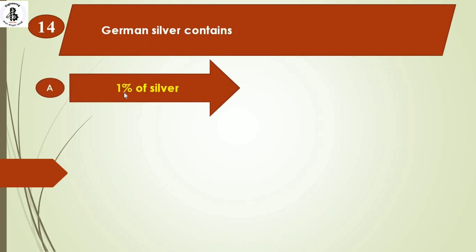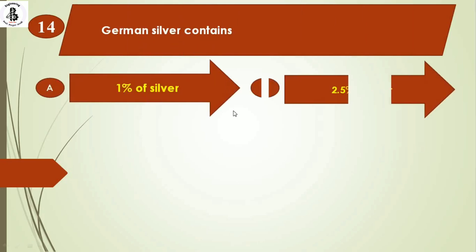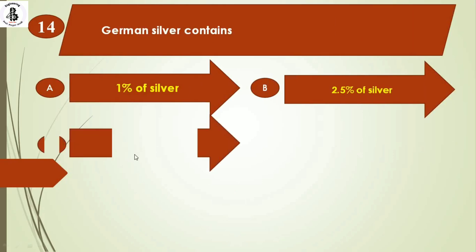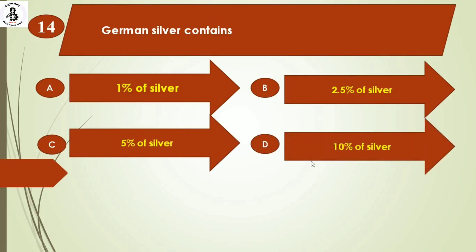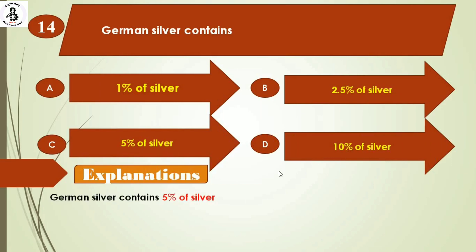The next question: German silver contains option A) 1% silver, option B) 2.5% silver, option C) 5% silver, option D) 10% silver. German silver contains 5% silver in its composition, so the right answer is option C.